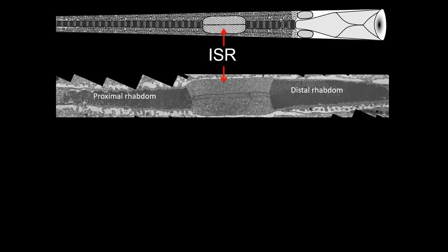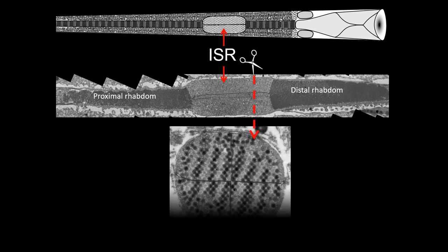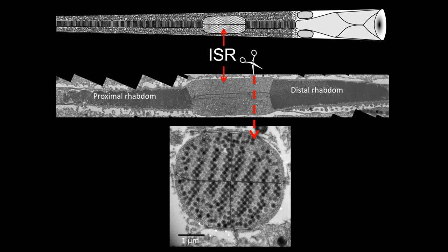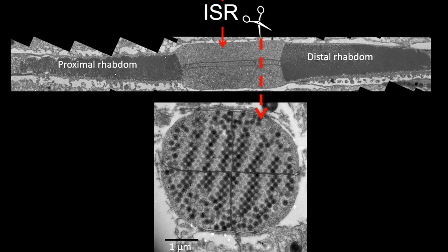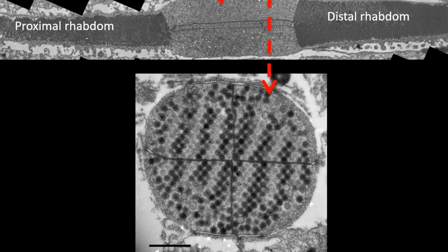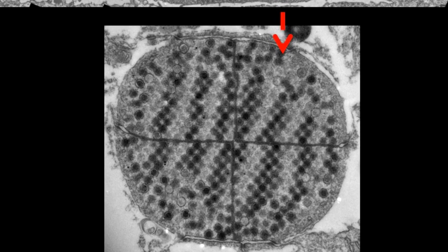Transmission electron microscopy, or TEM, revealed that the ISR is a four-part, barrel-shaped structure full of hundreds of small, round units called vesicles, each about 152 nanometers in diameter, which is the perfect size for interacting with wavelengths of visible light.